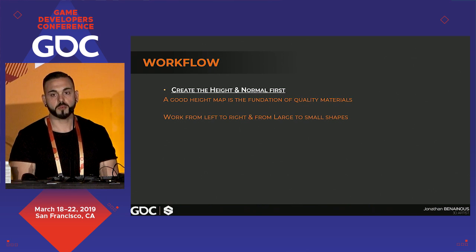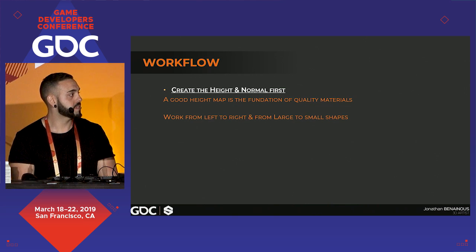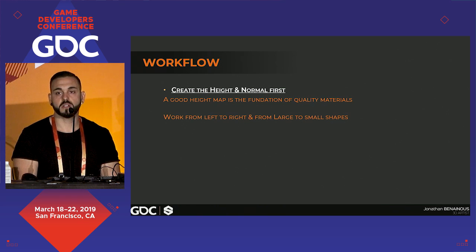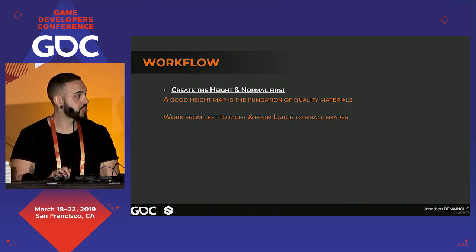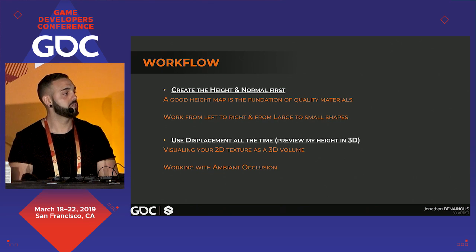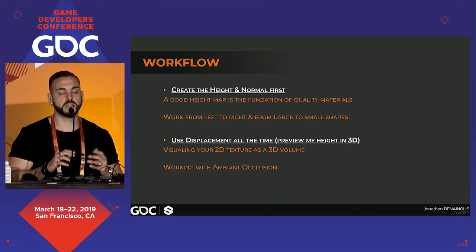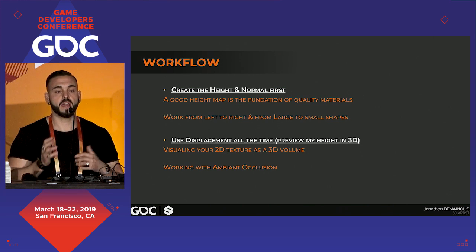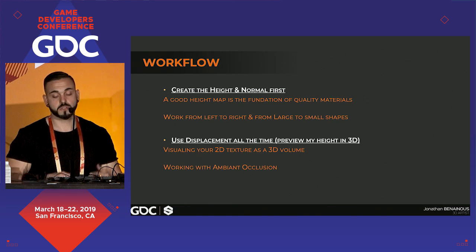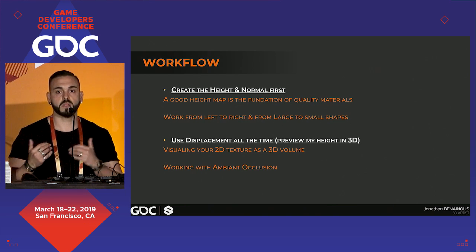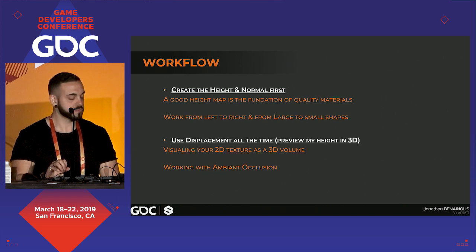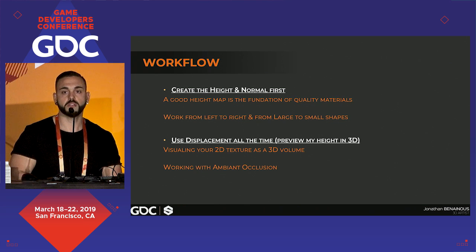About my workflow: when I start working on a material, I begin by creating the height and the normal first. A good height map is the foundation of quality materials. I always work with a gray albedo to stay focused on the sculpt, working from left to right and from large to small shapes. I use displacement all the time to preview my height in 3D — visualizing your 2D texture as a 3D volume. The height map is essentially the sculpting step in Designer, where you're adding and subtracting grayscale shapes. I also work with ambient occlusion very early, using an HBAO node with default settings to help visualize volumes.